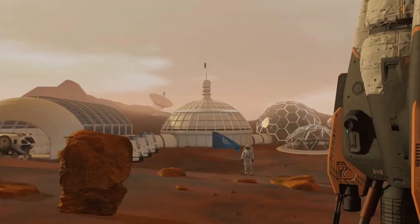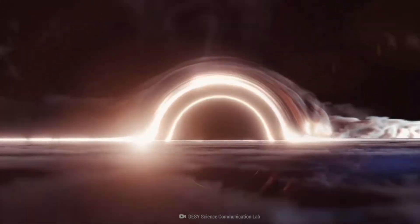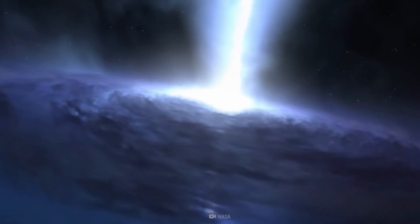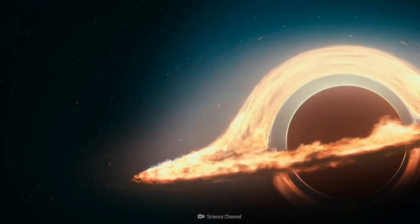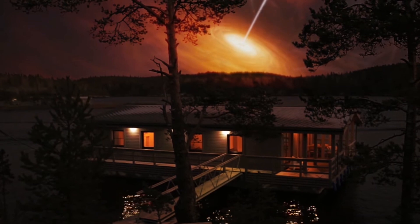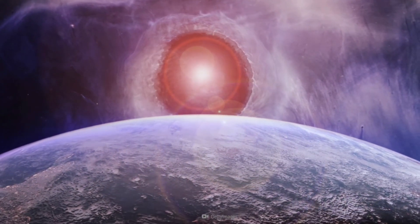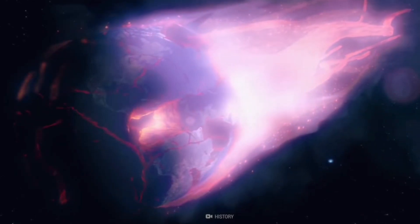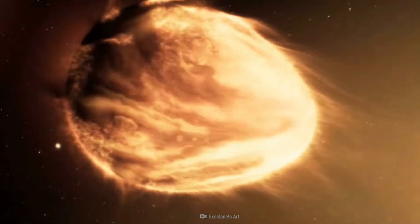And Mars? Say goodbye to any hope of settling there. Eventually, Earth would be next. As Ton 618 closed in, we'd find ourselves at the edge of its event horizon, the ultimate boundary where escape becomes impossible. The gravity would stretch our planet like taffy, then compress it into nothingness, a process known as spaghettification.